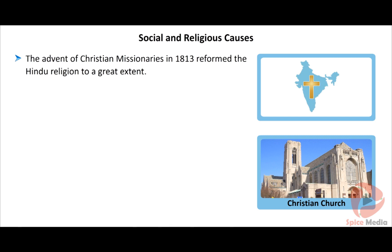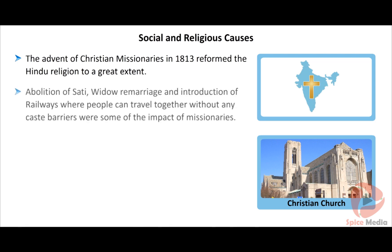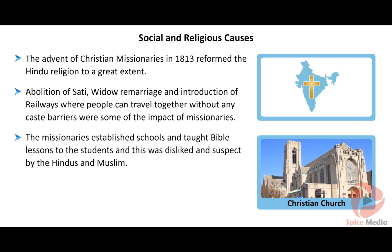From 1813 AD, Christian missionaries entered India with an intention to civilize Indians by converting them to Christianity. Abolition of Sati, widow remarriage, and introduction of railways — where people could travel together without caste barriers — were some of the impacts of the missionaries. The missionaries established schools for boys and girls in which teaching of the Bible was also compulsory. This made orthodox Hindus and Muslims suspect the British attitude towards Indians.